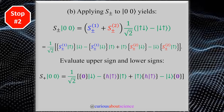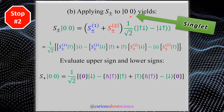This brings us to our next stop. In part B, we apply the raising and lowering operators to the specific state |0,0⟩. Since the total S is 0, there is only one possible combination — this is a singlet state. That's the only one that could possibly exist in the addition of two spin-1/2 particles. With S=1 giving three triplet states and S=0 giving this singlet, you can see how these grow as we add higher spins.